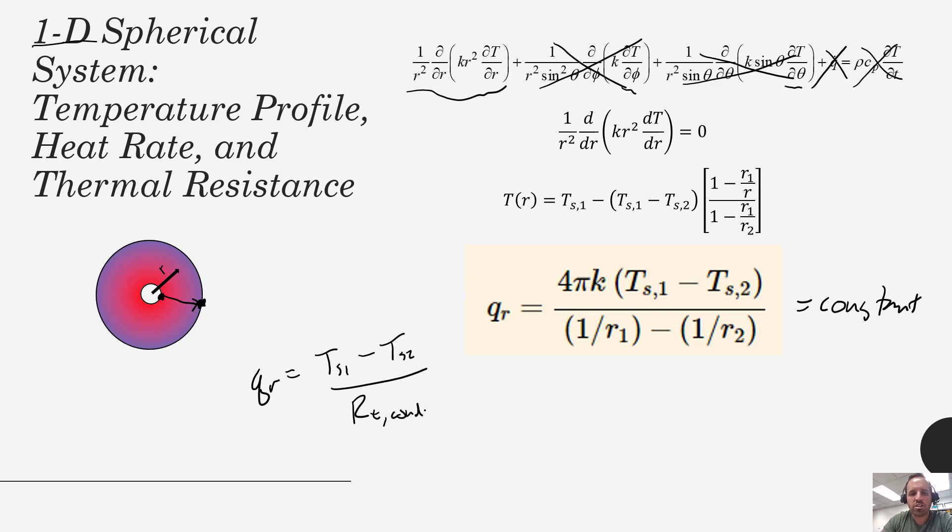By inspection we can look at this equation and try to rearrange this to look like that, and we can see that if we took the inverse of that part of the equation we could define that as our conductive thermal resistance through this spherical wall. And that's exactly how we arrive at our total thermal resistance for a spherical wall.